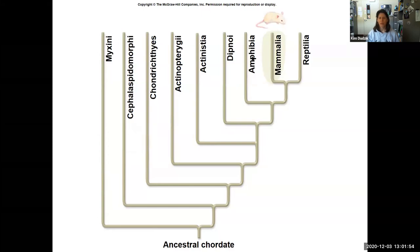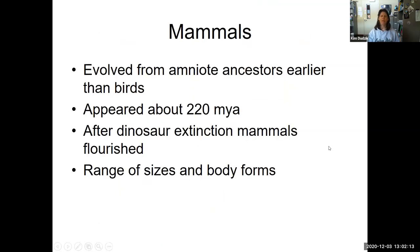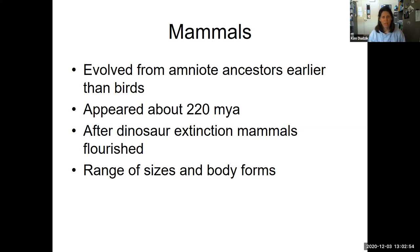We started with Amphibia, then we went over Reptilia which also included the birds. And so now this is Mammalia and how mammals evolved. Mammals are considered an amniote - they evolved from an amniote ancestor earlier than birds, except they do not lay their amniote egg outside. The egg is retained inside the body and the embryo develops within the membranes we associate with the amniote egg. We have the chorion, amniotic fluid, and some of those layers actually become part of the placenta.